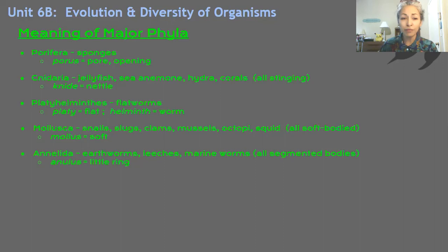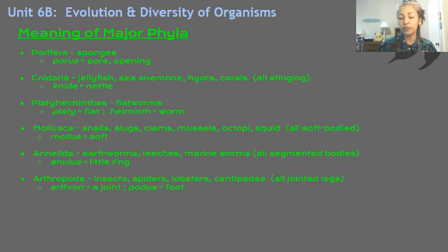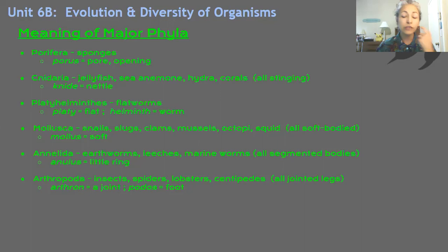How about Arthropoda? These are insects, spiders, lobsters, and centipedes — they don't sound like they have much in common. But 'arthron,' the root word, means a joint, and 'podus' means feet — jointed feet. Arthropoda: jointed feet. These creatures all have jointed legs. It makes sense.